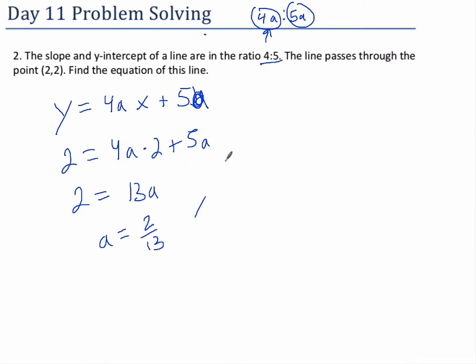Okay, so a equals 2 over 13, we can now plug that into the equation. So it's going to be 4 times 2 over 13x plus 5 times 2 over 13, so it is 8 over 13x plus 10 over 13 is your equation of the line.